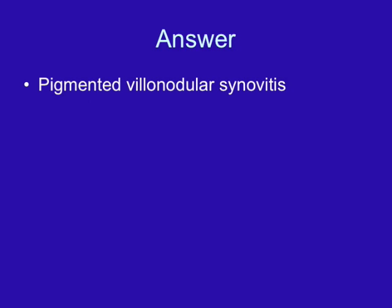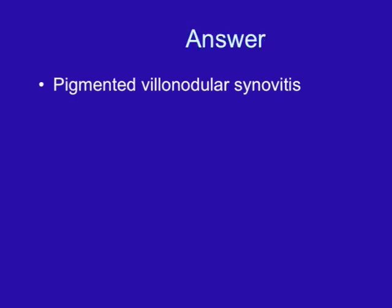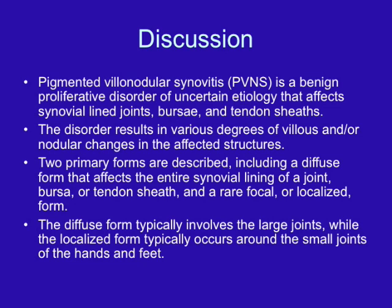Our patient ended up having pigmented villonodular synovitis, or PVNS. It is a benign proliferative disorder of uncertain etiology that affects the synovial-lined joints, bursa, and tendon sheaths, resulting in various degrees of villous and/or nodular changes. Two primary forms exist: a diffuse form affecting the entire synovial lining of a large joint, and a rare focal or localized form typically occurring around the small joints of the hands and feet. Our patient had the more typical diffuse form involving the large right hip joint.